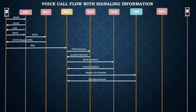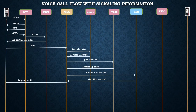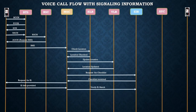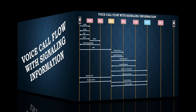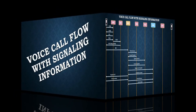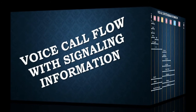EIR returns back with the checklist information. MSC then requests the Ki (individual subscriber identification key). The MS provides the Ki information to MSC, and MSC in turn sends that information to EIR to verify whether this is a valid subscriber. Once the Ki information is successfully verified, MSC proceeds to the next step.